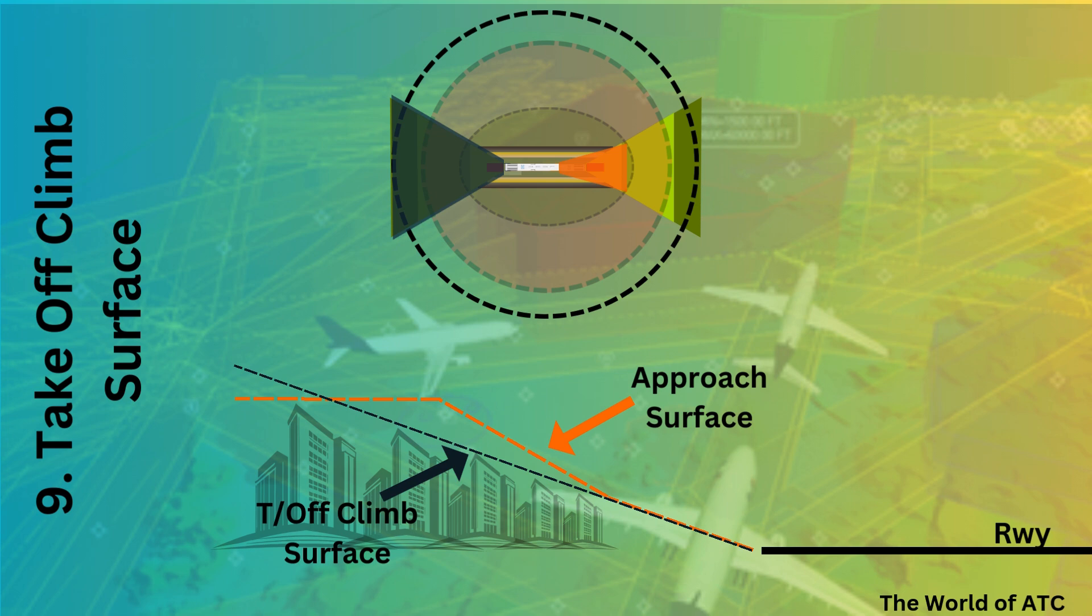For the second plane of approach surface, you'll have to comply with the take-off climb surface because it is more stringent in terms of slope. For the third plane, you can move towards the approach surface since it has zero slope.